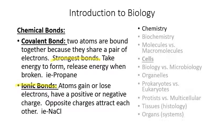Ionic bonds are where one atom doesn't just share another atom's electron — it actually steals it completely. If you steal an electron from another atom, you develop a negative charge, and the atom you stole it from will have a net positive charge. You will then stick together by the positive-negative attraction, since positive charges are attracted to negative charges.